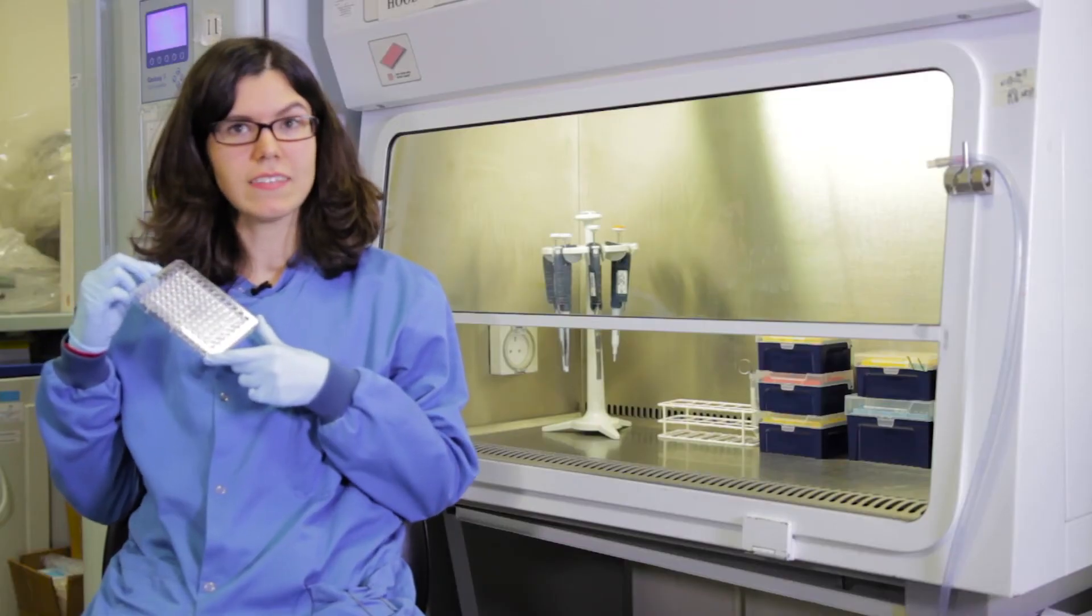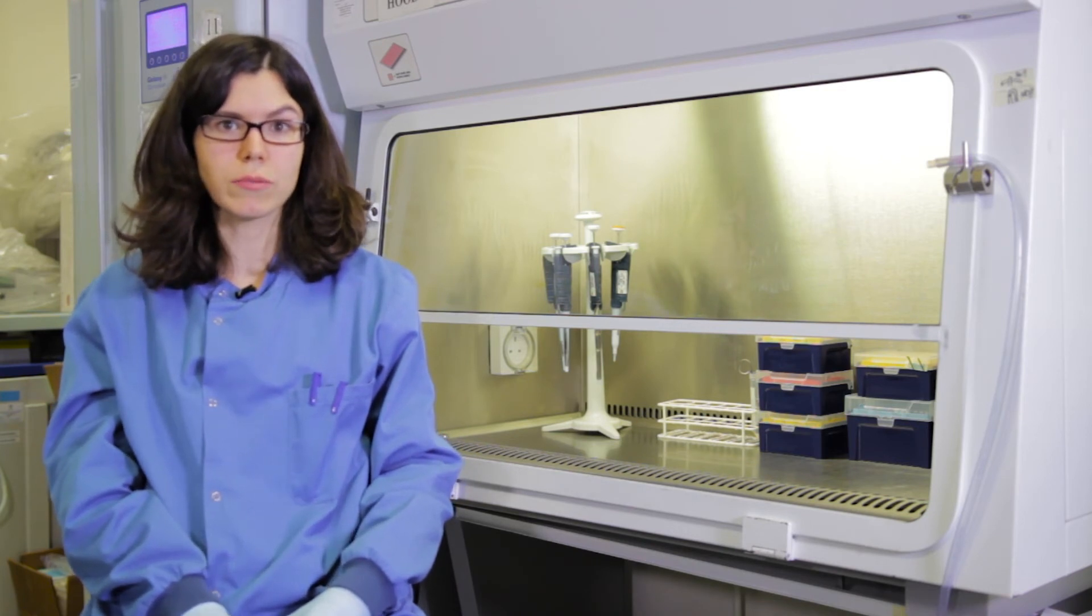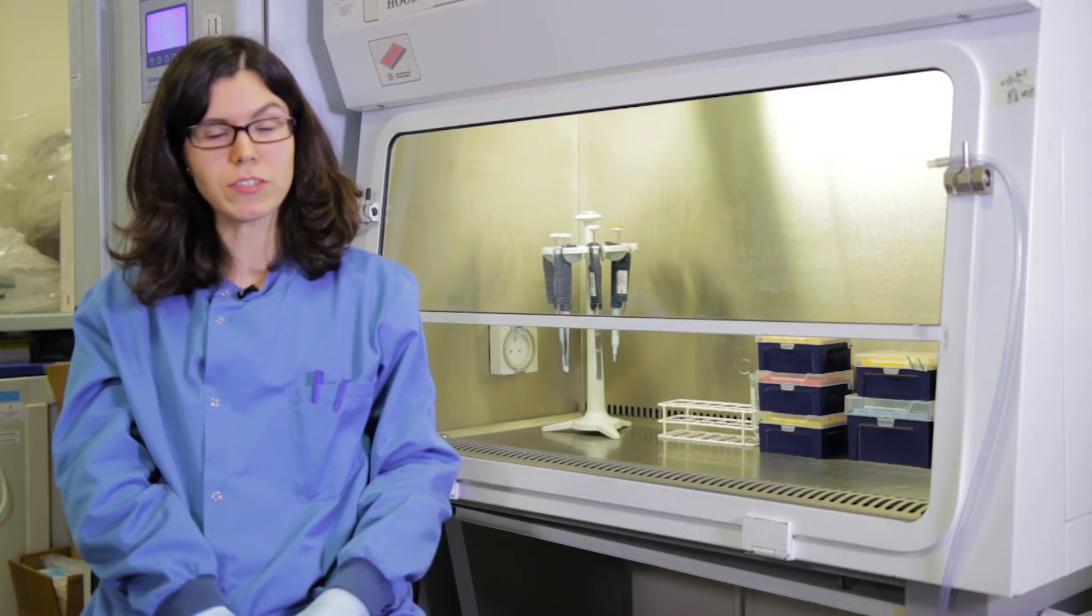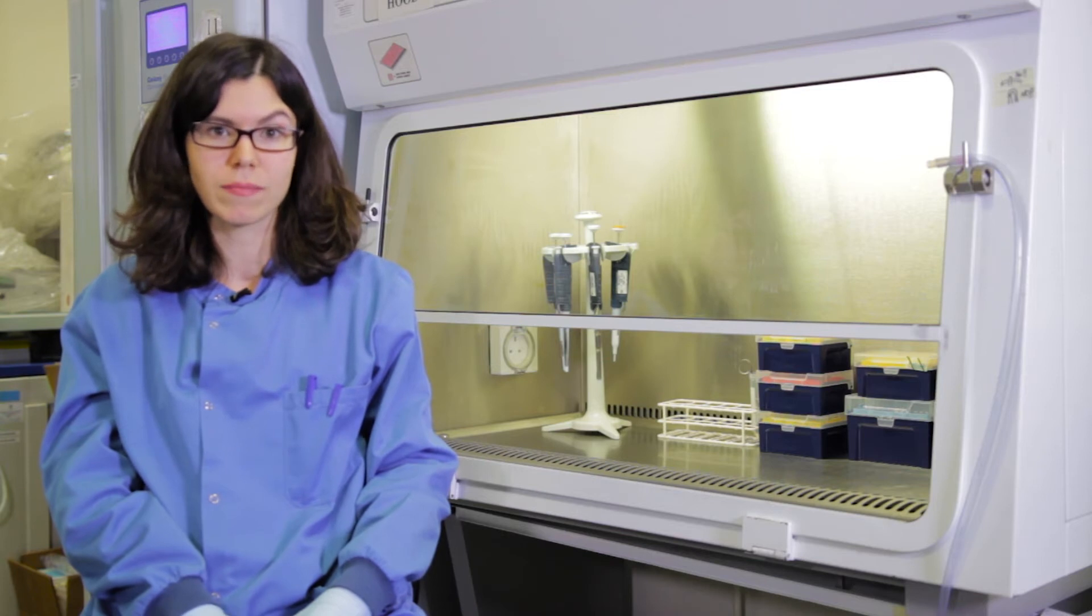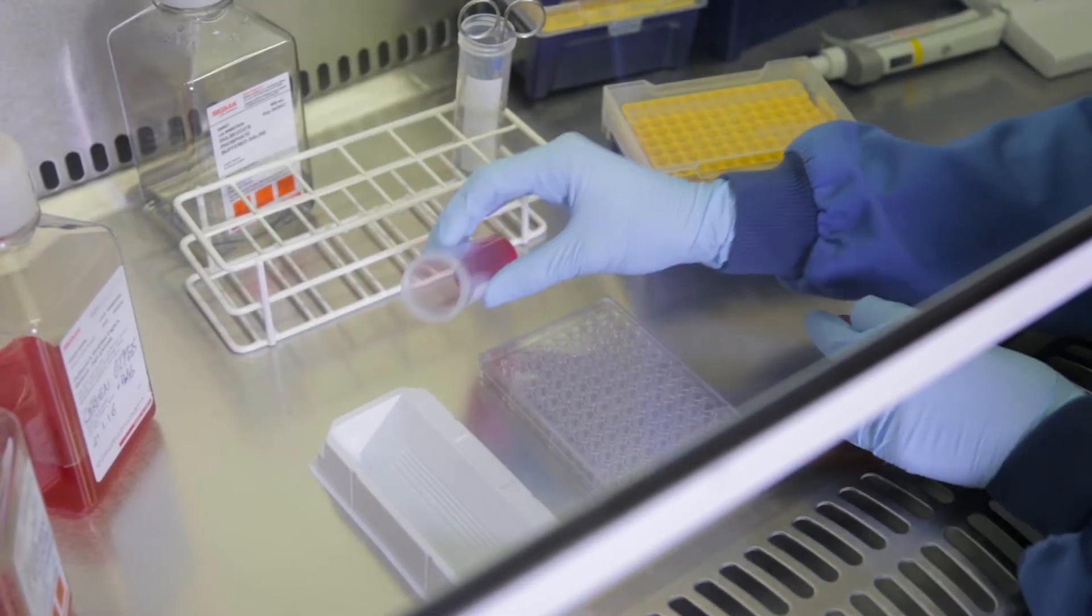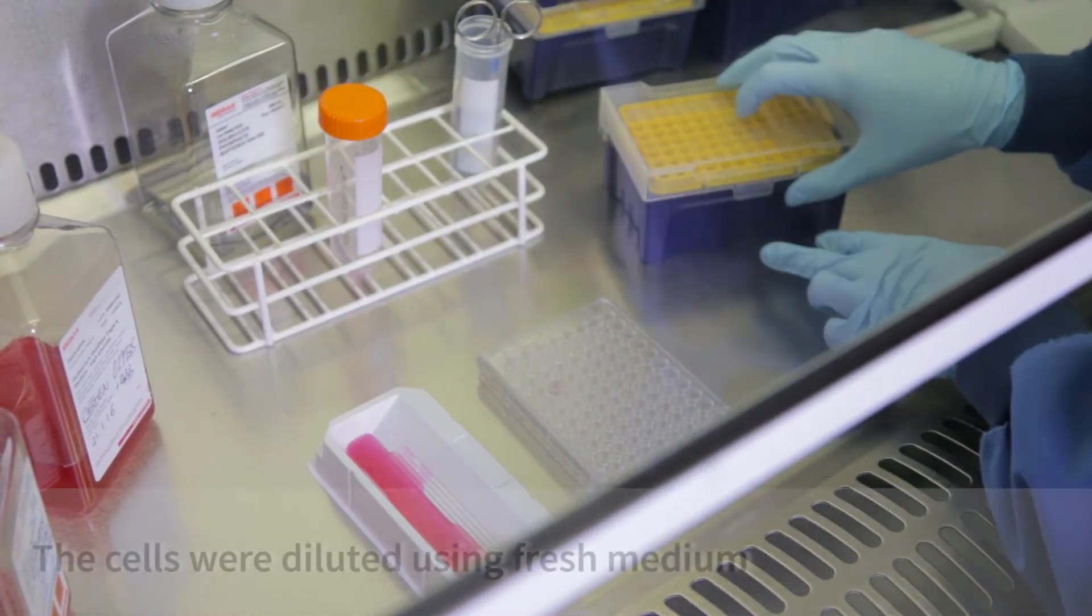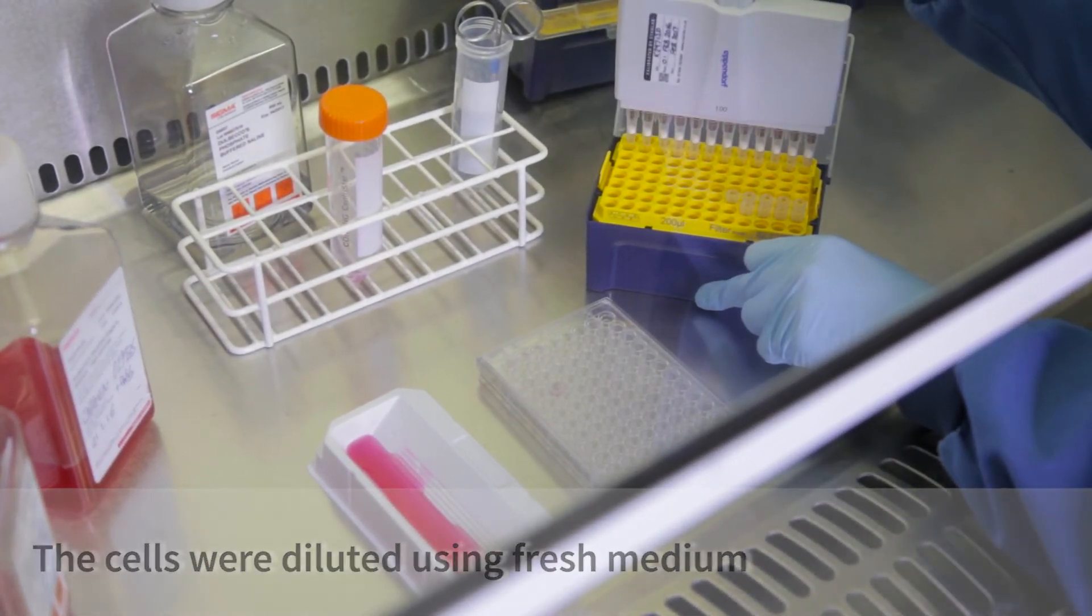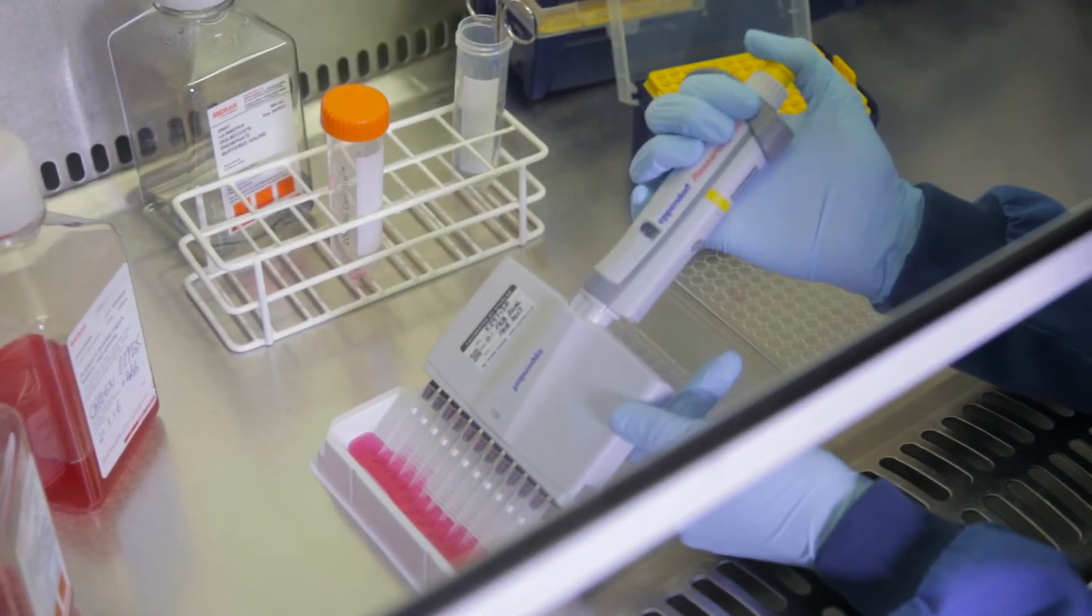This plate has 96 wells. I will now add a certain number of cells to each well. That is called seeding. I use this plate because it allows me to try many different treatment conditions at once. I will add a different treatment to each well. I normally seed 10,000 cells per well. I have diluted the cells to the desired concentration and volume using fresh medium.